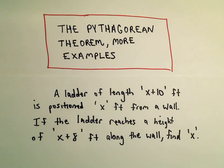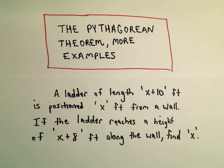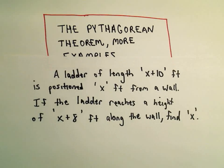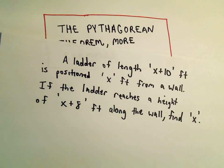Alright, so one more example using the Pythagorean Theorem. In this problem we have a ladder of x plus 10 feet and it's positioned x feet away from a wall. The ladder is going to reach a height of x plus 8 feet along the wall. What we want to do is find the value of x.